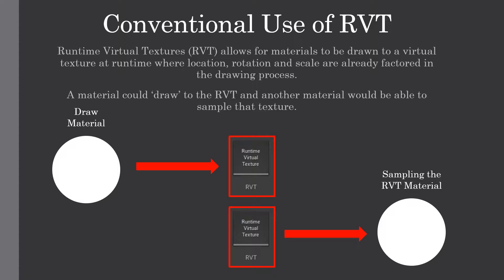Runtime Virtual Textures allow materials to be drawn to a virtual texture at runtime, where location, rotation, and scale are already factored into the drawing process. A material could draw to the Runtime Virtual Texture and another material will be able to sample that texture — outputting a shape that another material can then utilize.